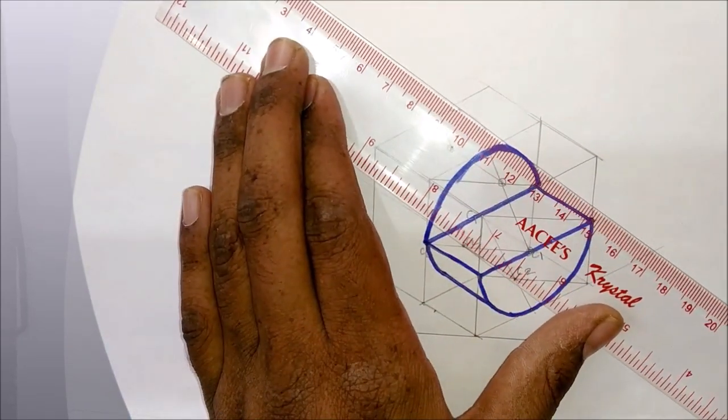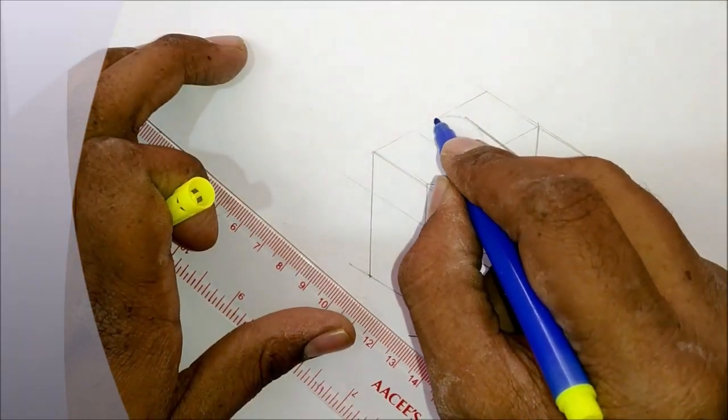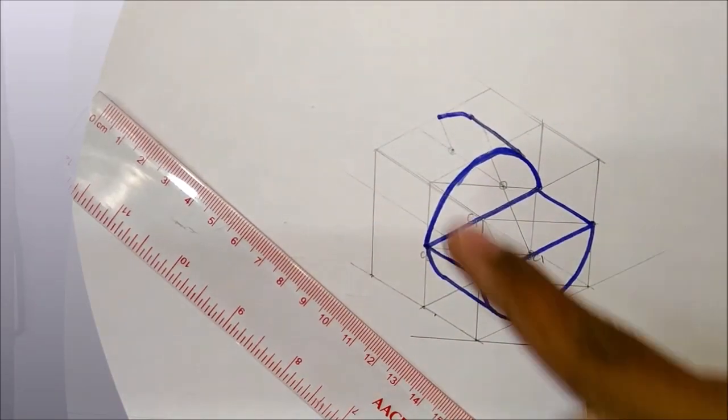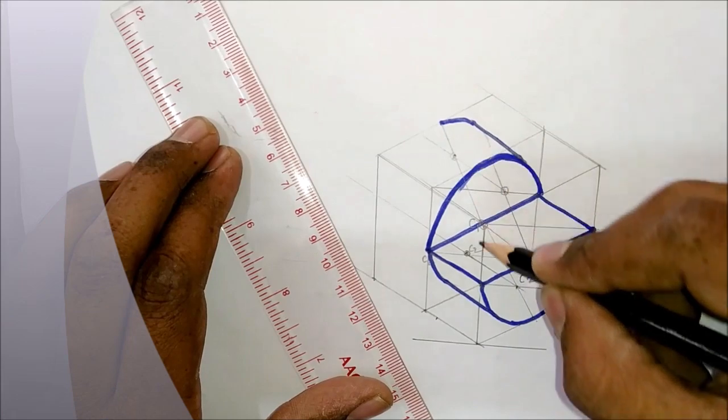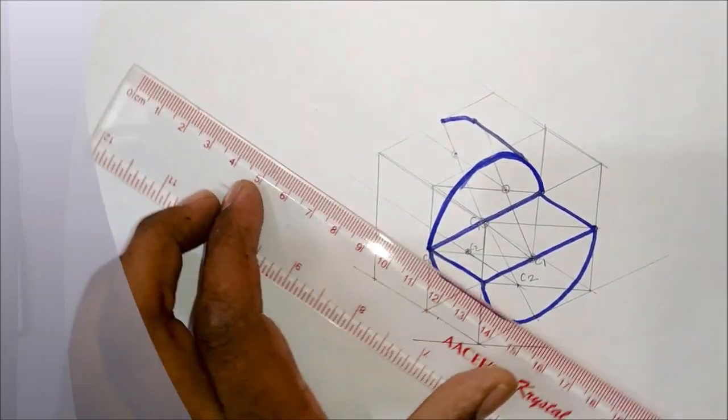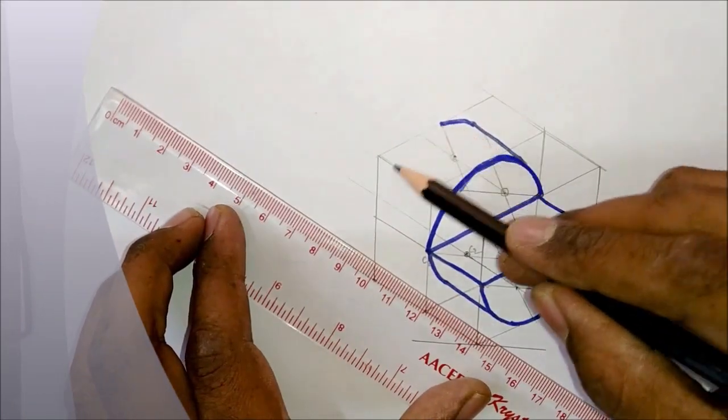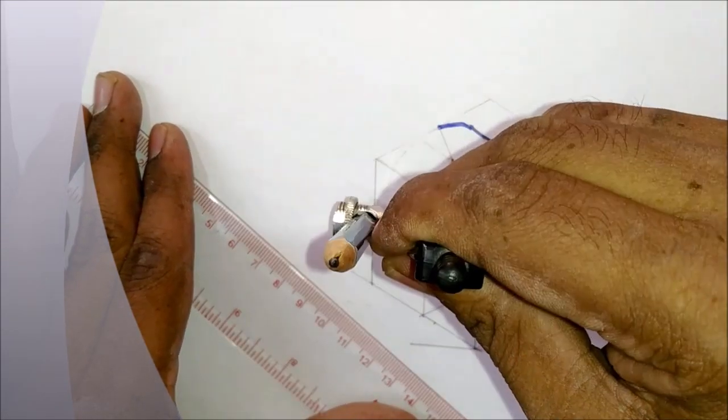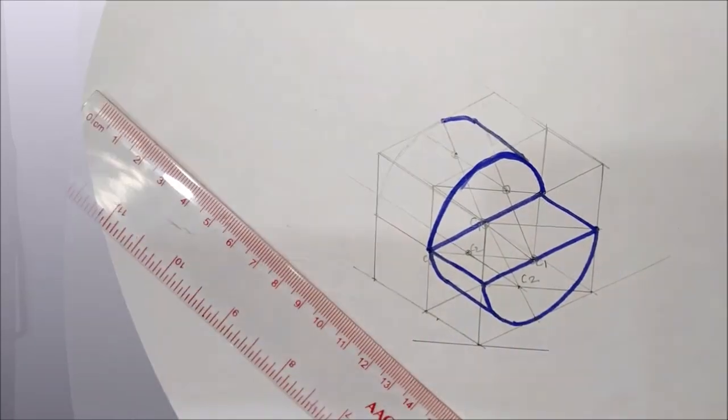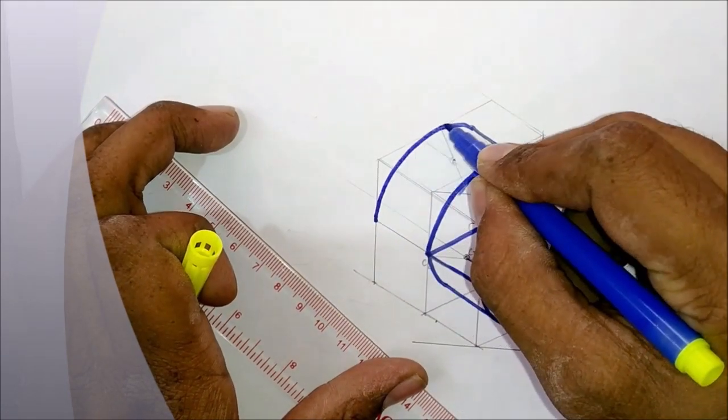Now draw a line parallel to the isometric axis. This is the half portion of the circle is completed. We will shift this center and radius 20mm behind. We will draw the arc here. This is the arc.